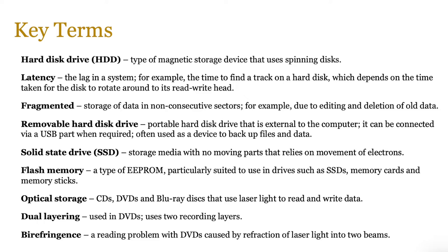There's also fragmentation for hard disk drives, where you might store data on non-consecutive sectors in different places, which makes it very difficult to read, change, or even delete the data. You've probably come across removable hard disk drives, solid state drives which use no moving parts and are basically made out of logic gates, flash memory as another example of solid state devices, and optical storage — CDs, DVDs and Blu-rays.